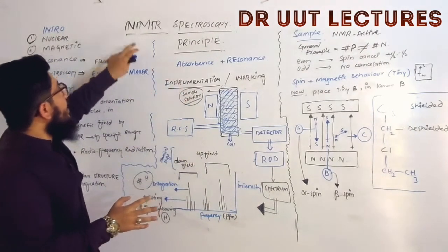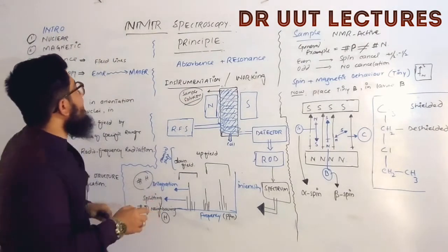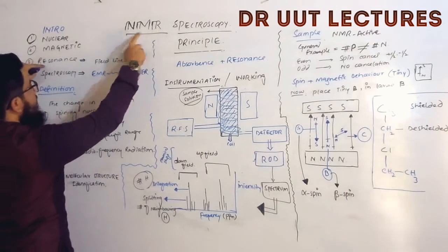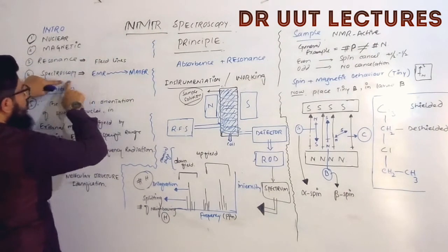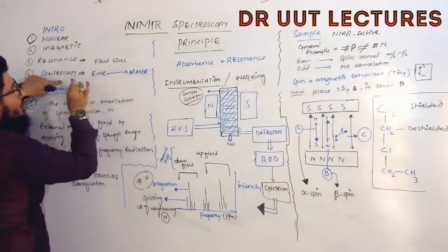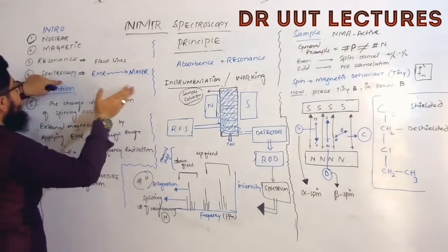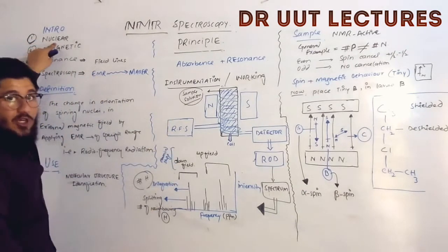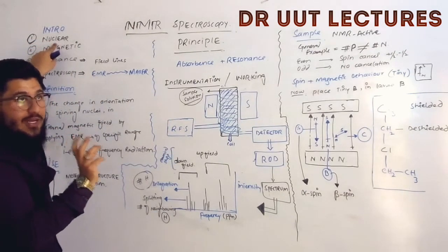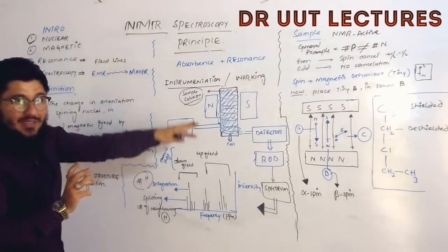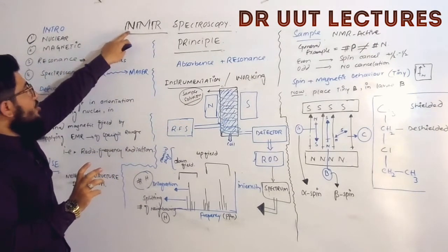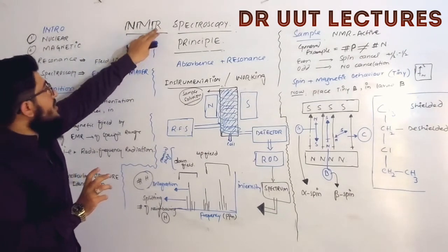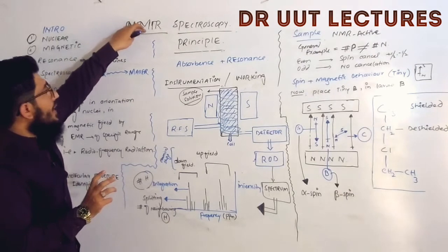NMR spectroscopy: N stands for nuclear, M stands for magnetic, and R stands for resonance. In this spectroscopy we talk about the nucleus of an atom. We use a magnet, which is why it is called nuclear magnetic resonance — we perform some kind of resonance between the nucleus and the magnet.